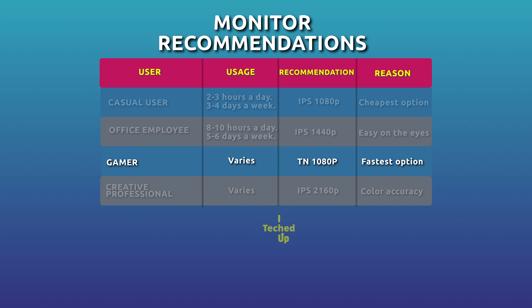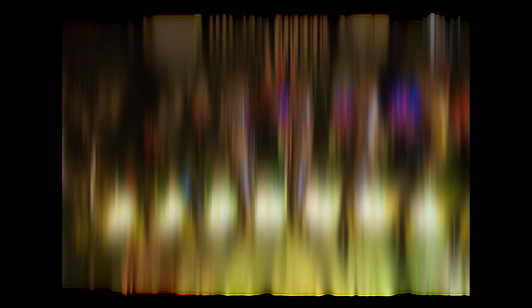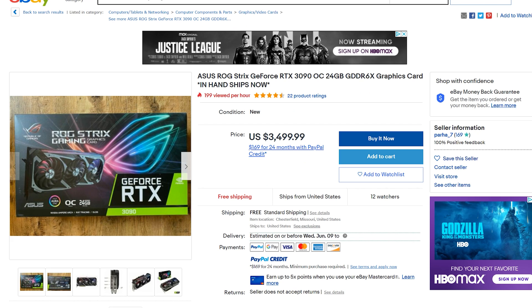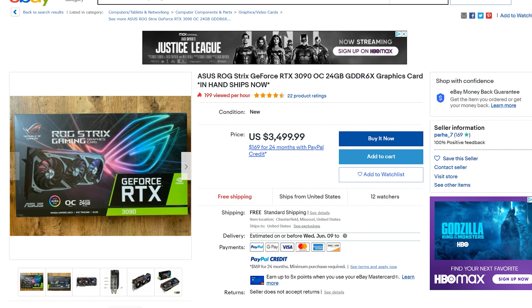Third, a gamer — someone who spends many hours on their PC. It's difficult to make a single recommendation because it depends on what kind of gamer you are, the types of games you play, and the GPU you're using. If you play competitively, go with a TN 1080p panel monitor — any decent GPU will handle the graphics and you'll get the highest refresh rates and fastest response times. You can also go with a 1440p IPS panel with similar performance if you have more budget. If you're lucky enough to get an RTX 3080, a 4K monitor could be an option — and if you manage to score an RTX 3090 from a scalper, even more so.